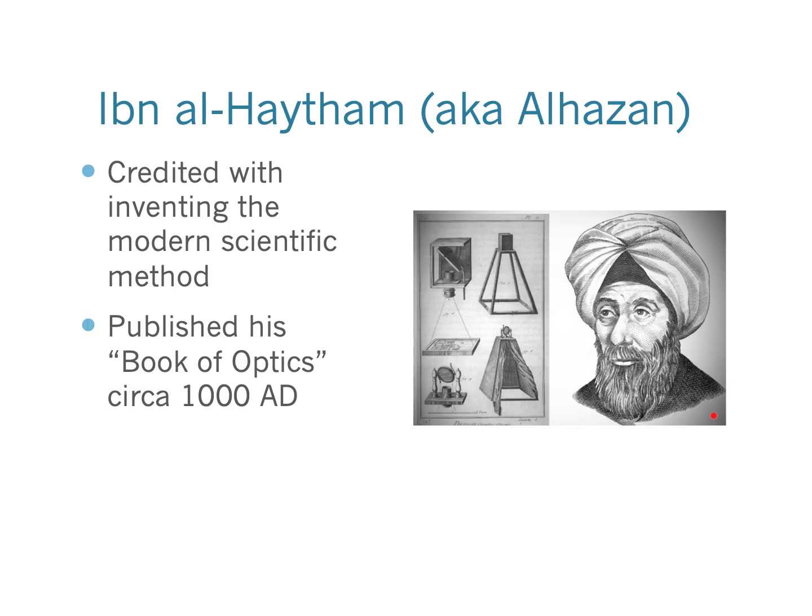Here we have an image of one of the most important scientists you've probably never heard of. His name was Ibn al-Haytham — in the West, we usually refer to him as al-Hazan. Al-Hazan was a Muslim scholar who lived about a thousand years ago. Around the year 1000 AD, he published his Book of Optics, a seven-volume work in which he studied light, its behavior, the physics and mathematics of light, and even the psychology of perception. It was one of the first major scientific works ever written, and in it he laid out the process by which he made his scientific discoveries — today we call that the scientific method.